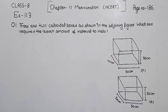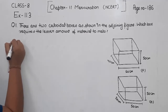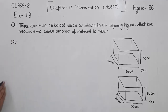There are two cuboidal boxes as shown in the adjoining figure. Which box requires the lesser amount of material to make? So both of them are cuboidal boxes. We are going to start with the first one — we are having two figures, and we have to find the total surface area of each cuboidal box.